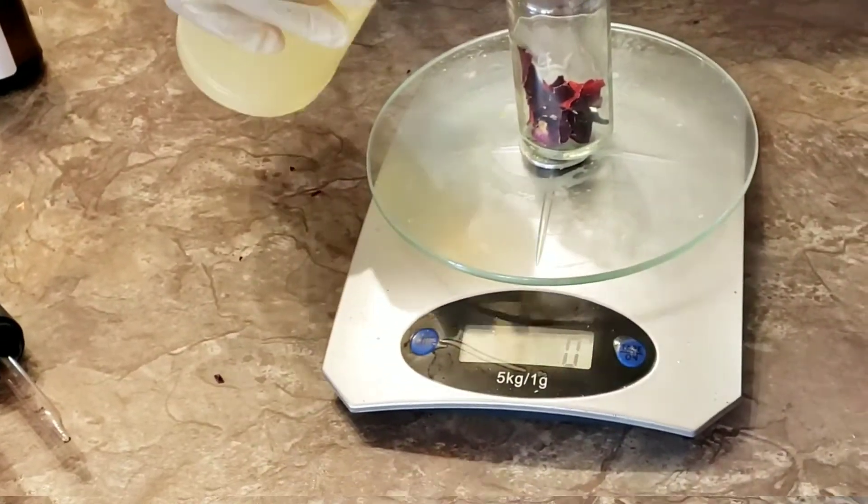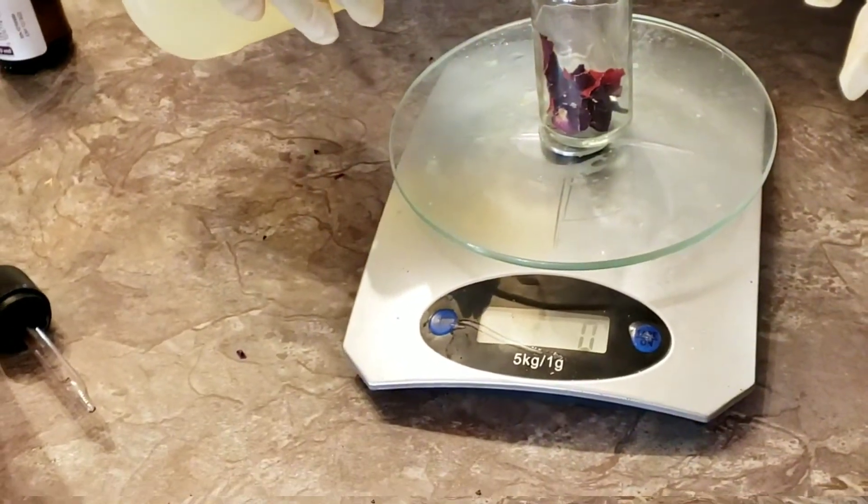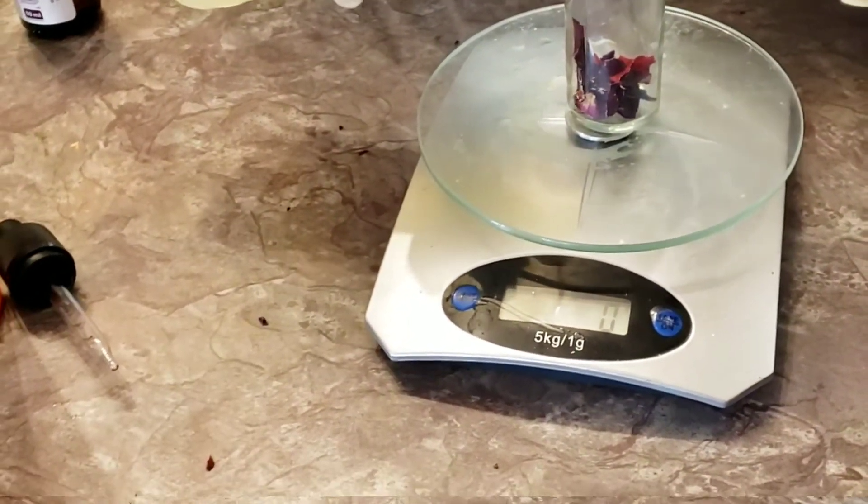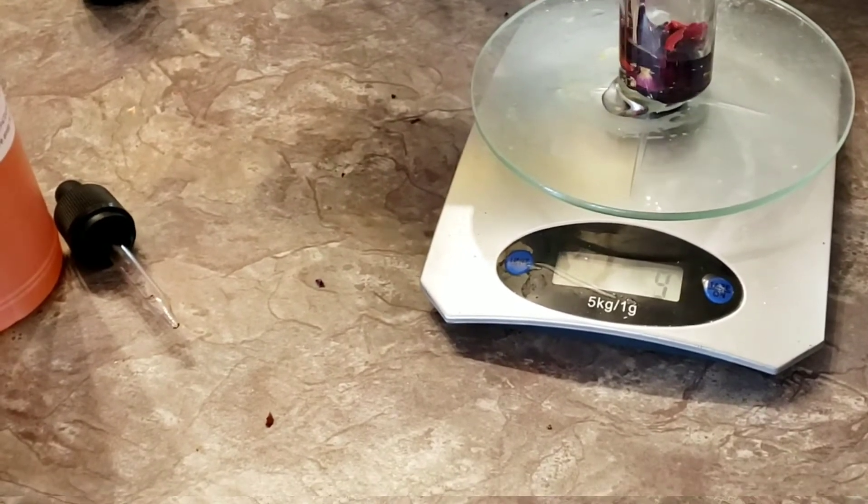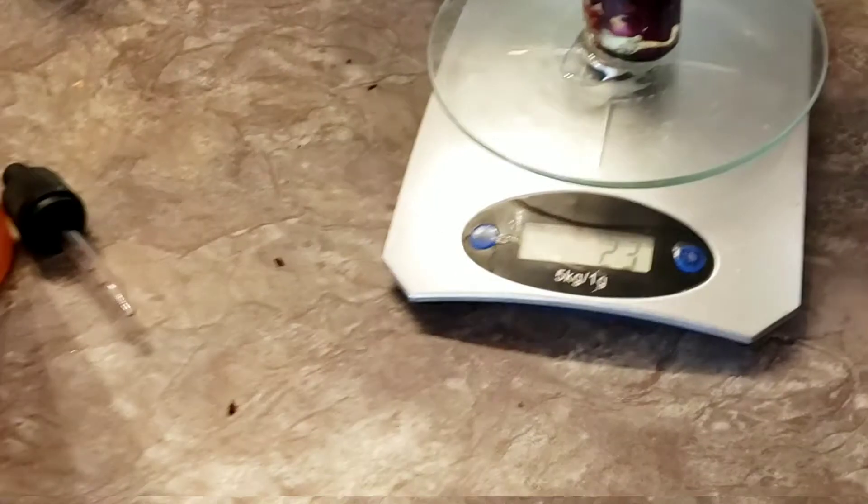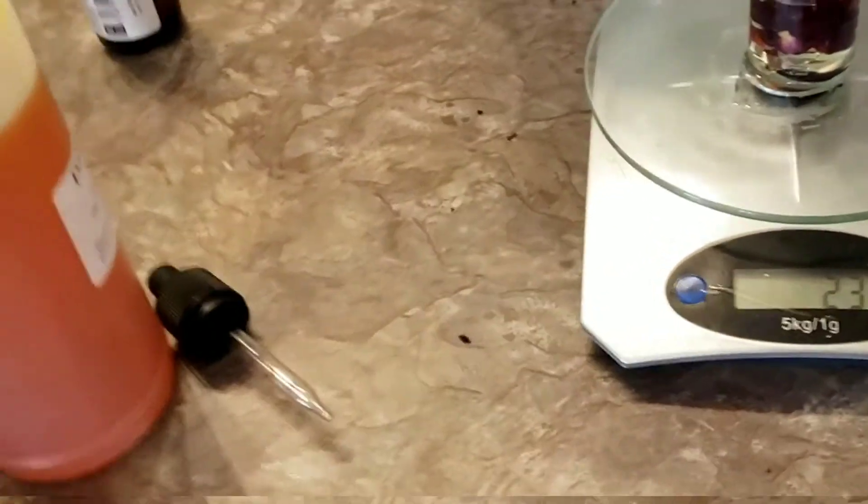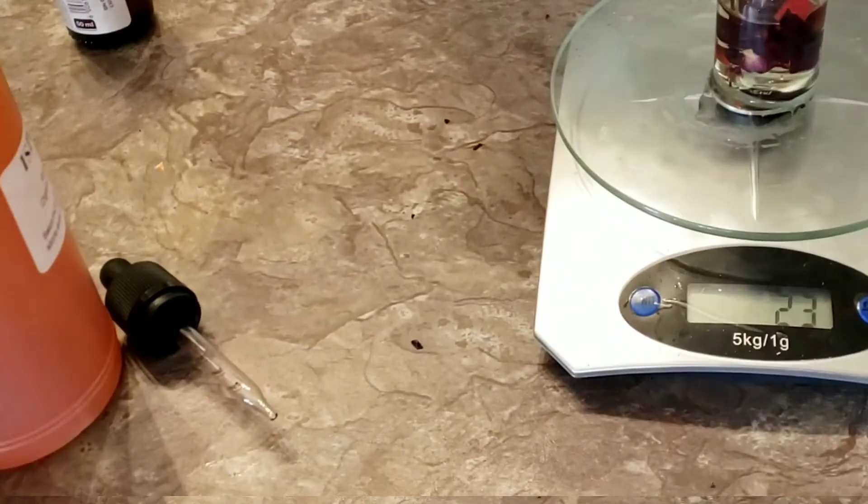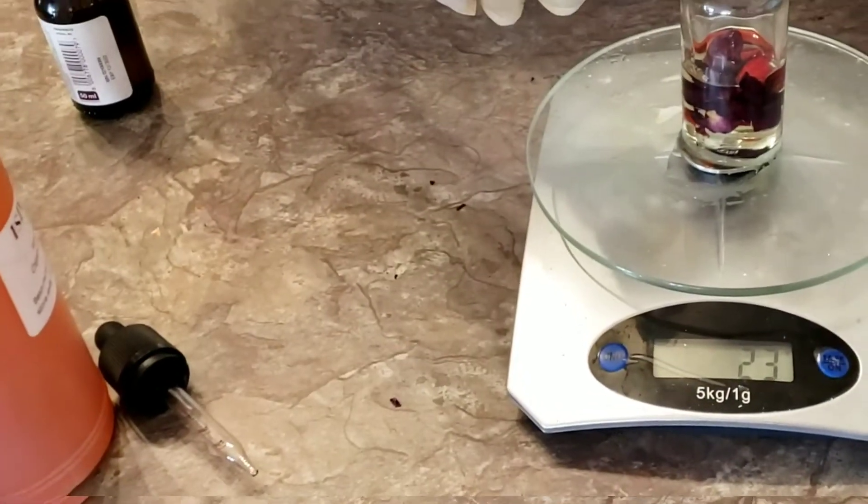The first thing you need to always do whenever you are doing your mixture, you need to measure all your ingredients. Remember here I'm using a 50 ml bottle. So the first ingredient I'm putting is olive oil. I'm using 23 ml of olive oil. The benefits of olive oil: it has many vitamins including vitamin A, D, K, as well as vitamin E.